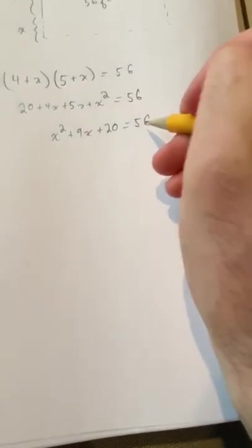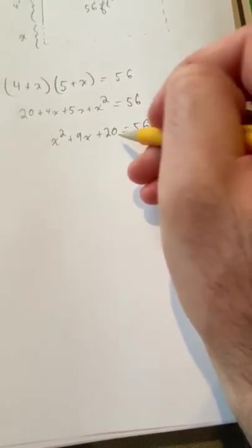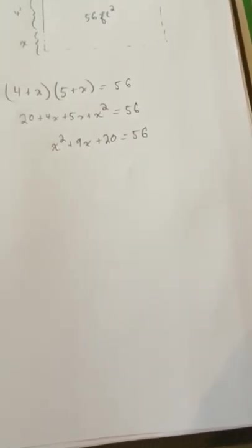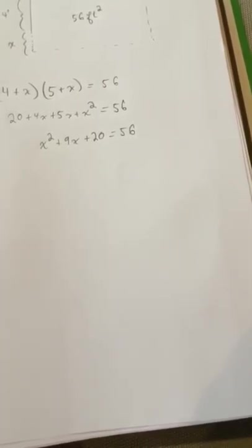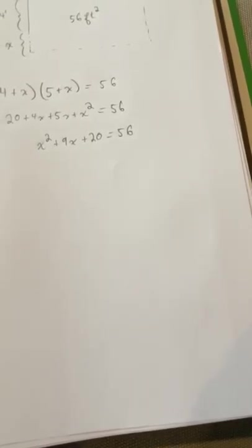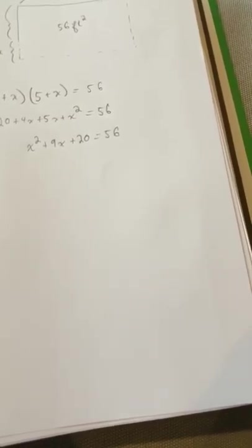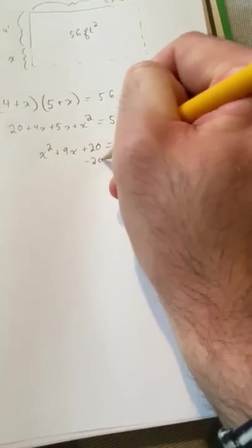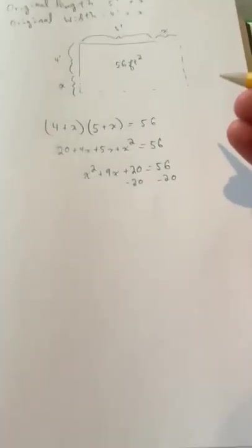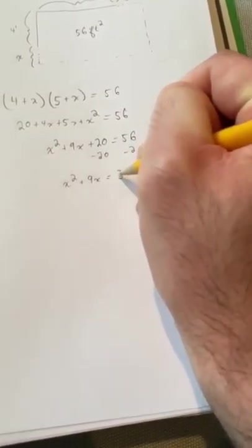And from there you kind of have two options. You can either subtract the 56 over here or you can subtract the 20 over here and then try to complete the square. Either way it'll work and you'll wind up getting a solution. But it's kind of up to personal preference. So why don't we try completing the square. Maybe we'll subtract this 20 here. So we have X squared plus 9X equals 36.